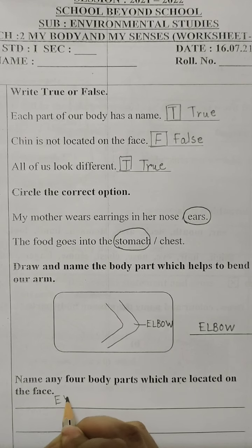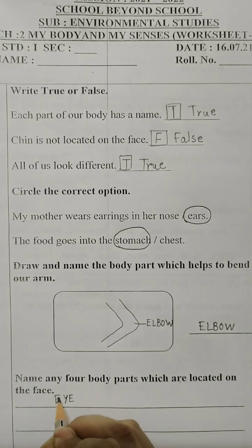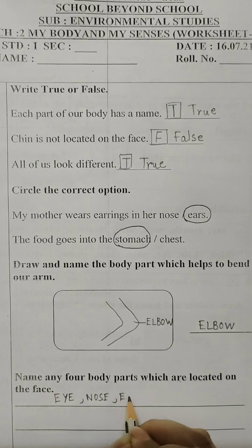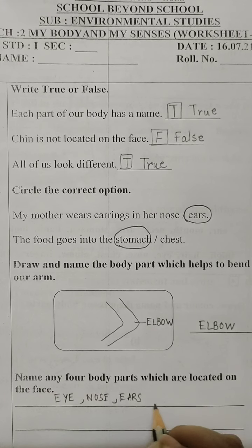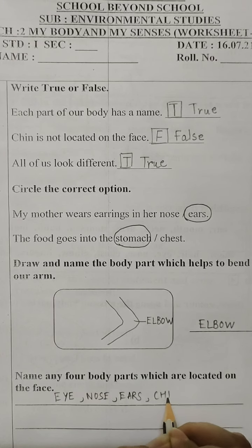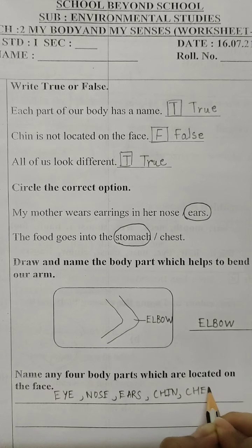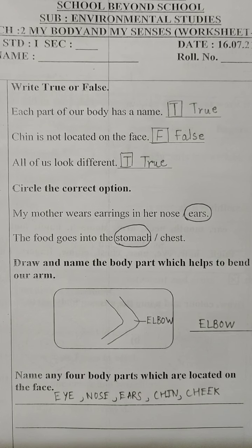So basically they are the sense organs like the eye, nose, ears, chin and cheek. So you can pick any four and write here.